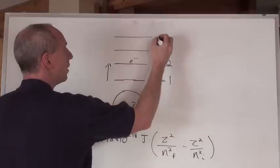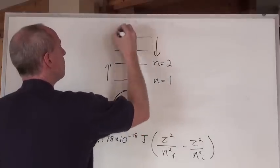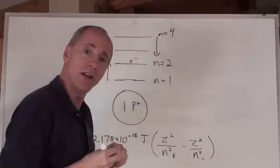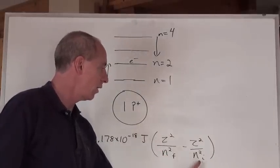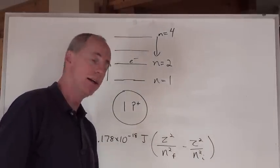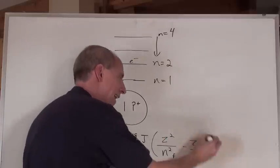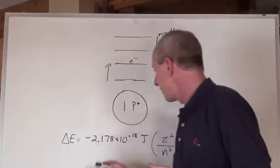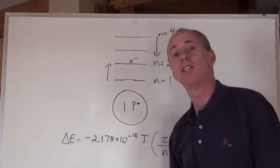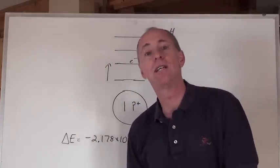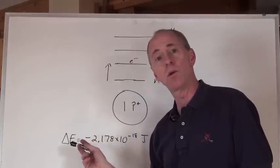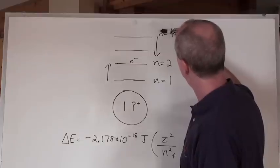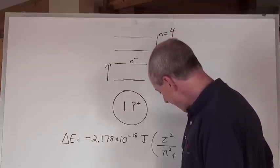Now, by the way, if we took an electron and moved it from n equals 4 to n equals 2, what is that? Well, that's a release of energy, because when you put that 2 here and that 4 here, and do that math, what you're going to get here is a number that's going to be positive. Positive times a negative means a negative change in energy. What does that mean? Energy is released. The negative in front of energy quantity means it's released. And of course, energy is released when an electron goes from n equals 4 to n equals 2.